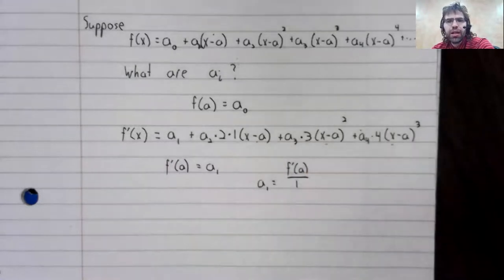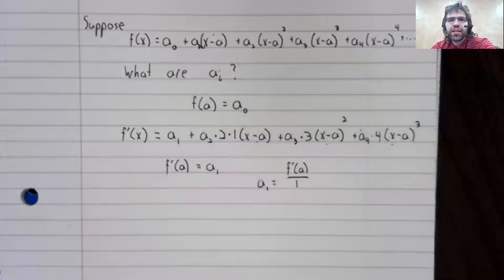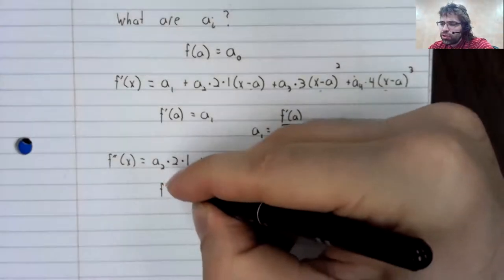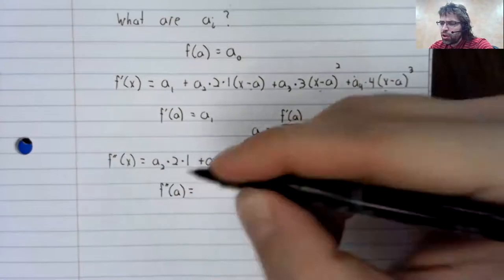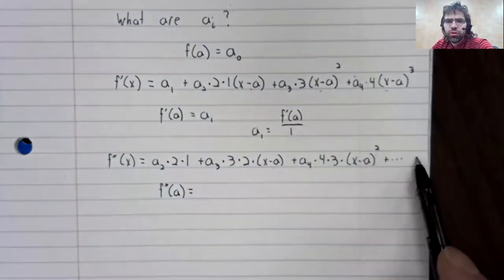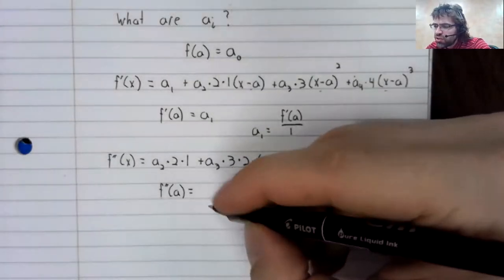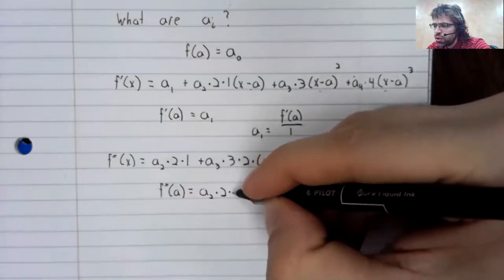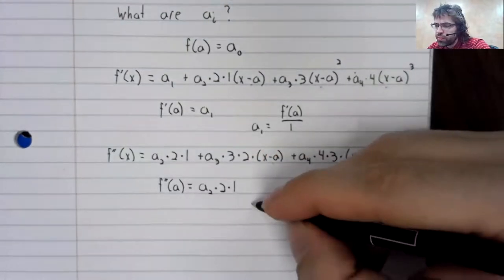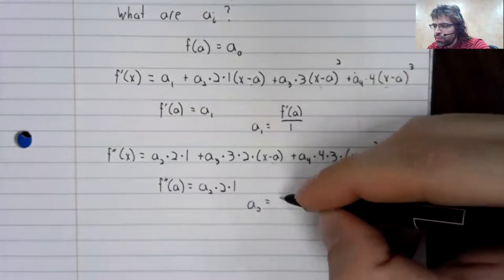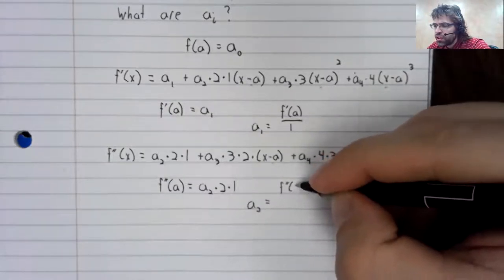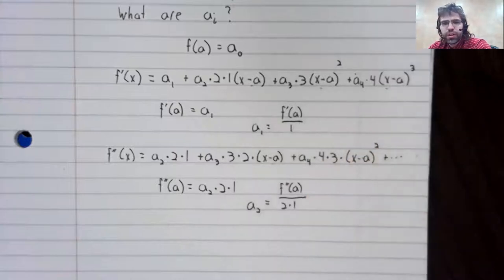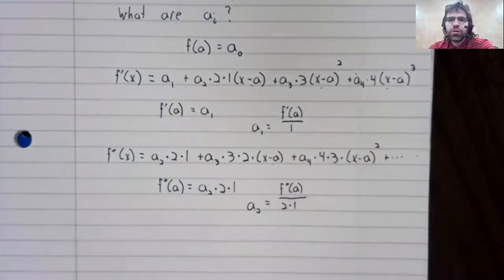and it will make the pattern clearer. And now we're going to keep repeating the steps. Take a derivative, plug a in. So the second derivative. Once again, we plug a in, and almost all of our terms turn to zero. The only terms that survive are this a sub two times two times one.